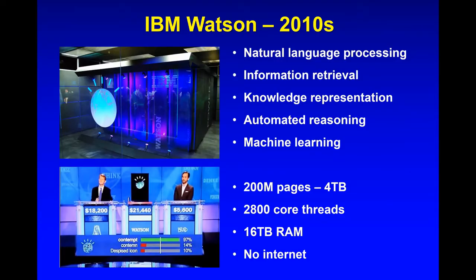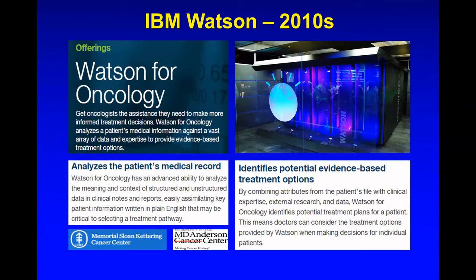In 2010, IBM Watson was released and beat the Jeopardy! champion. This was a real tour de force and many consider it the end of the AI winter — the first real big demonstration of AI in a human-competitive form. Watson combined great technology: natural language processing, automated reasoning, machine learning, and more. Beating the best human competitors in the world was quite a feat. IBM, recognizing they had something special, decided to capitalize on this for business purposes.